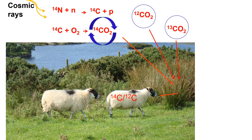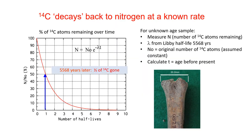When animals or humans eat that plant, they record a signature of the carbon-14, -13, and -12 that was in the atmosphere at that time. However, that carbon-14 decays back to nitrogen at a known rate, whereas the carbon-13 and carbon-12 stay stable. So if we look at a plot of the percent of carbon-14 atoms remaining over time, we'll see that it decays exponentially.